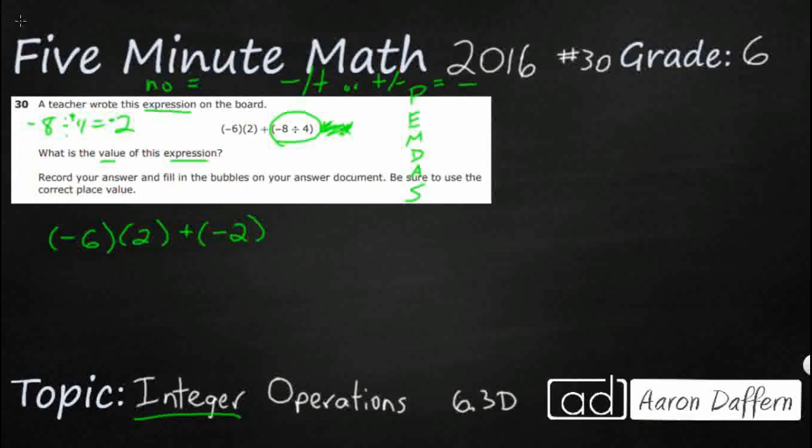So we divided negative 8 and a positive 4, and that made negative 2. So now I've got parenthesis negative 6, parenthesis 2, plus this negative 2. So let's take care of this first, because there is a hidden operation here, which you probably know.